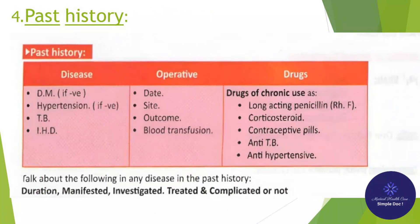4. Past history: diseases including DM, hypertension, TB, IHD — including any operative history with site and outcome — blood transfusion, and drugs of chronic use such as long-acting penicillin, corticosteroids, contraceptive pills, anti-TB drugs, and antihypertensives. For any disease in past history, discuss: duration, how it manifested, how it was investigated, and whether it was treated and complicated or not.